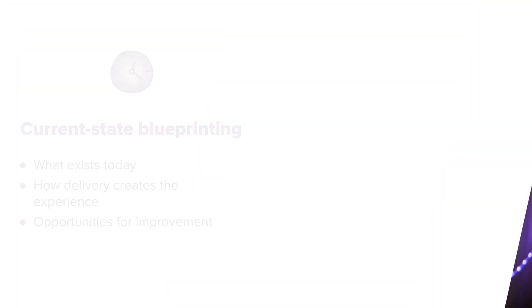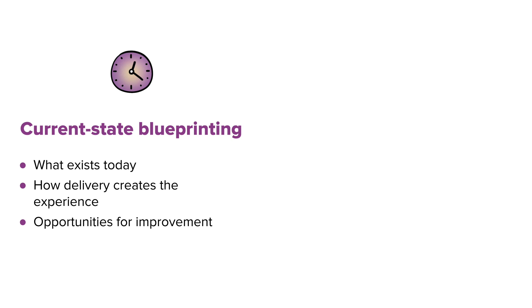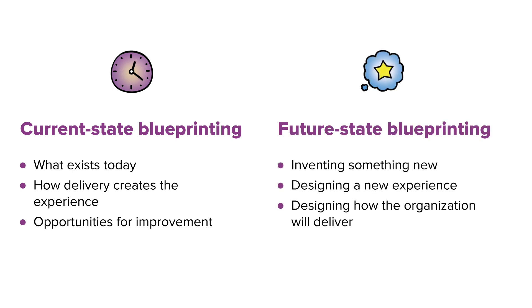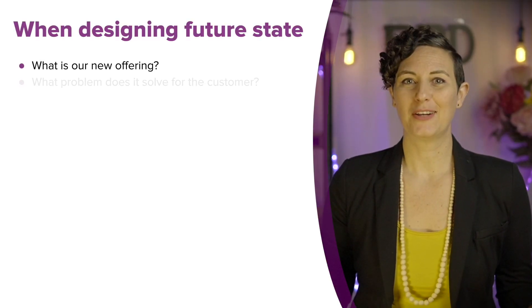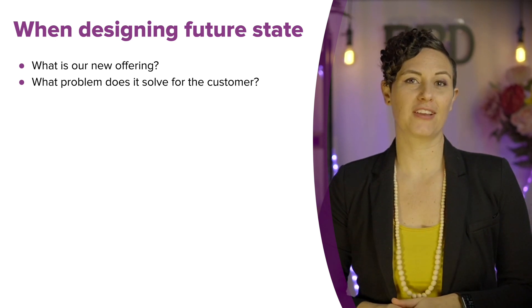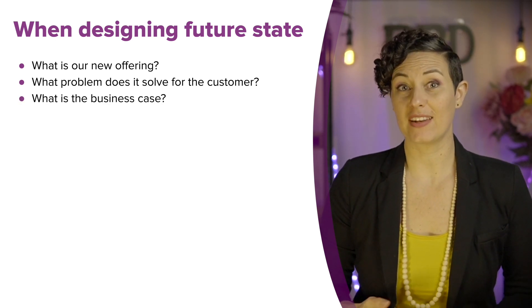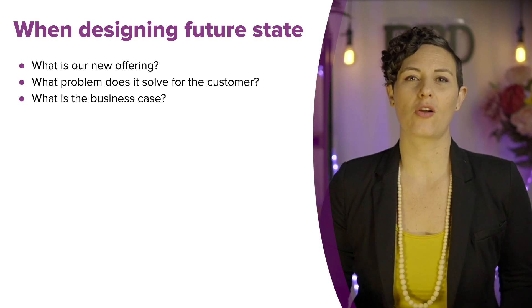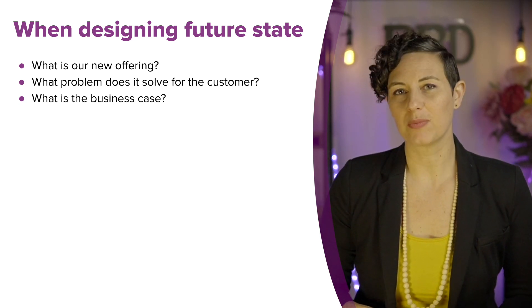So how are current state and future state blueprinting different? Where current state blueprinting is focused on looking at the reality of an existing delivery process and how that results in the customer experience, future state blueprinting is about inventing something new, both for the customer and for the organization. When we are trying to imagine a new offering, there are several factors we should consider: What should we be offering? What need does it solve for the customer? Is there a business case for solving that need? And does this fit within our organization's portfolio, brand, and capabilities?